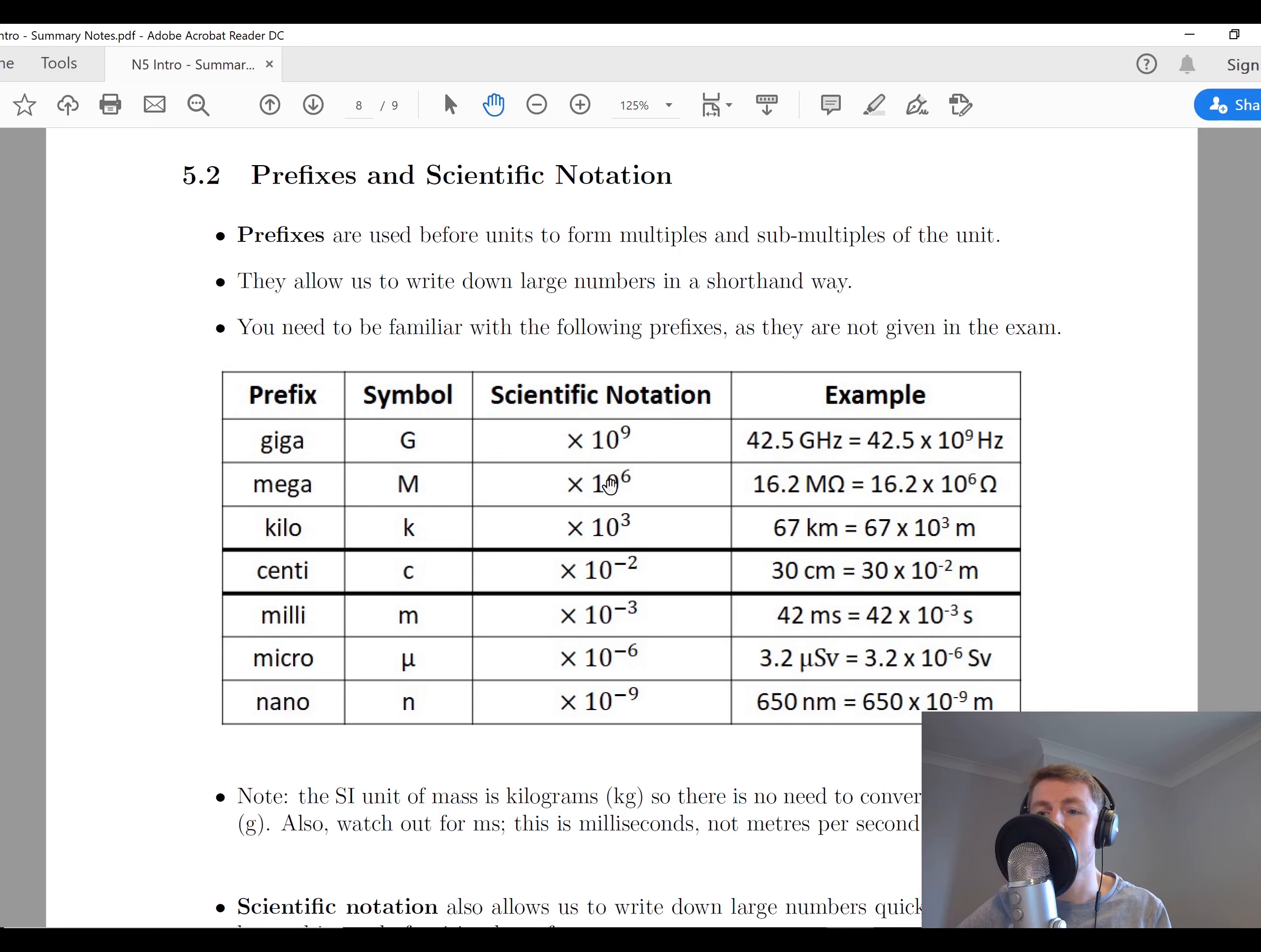This table here is something that you're just going to have to learn because you do not get this in the exam anymore. They used to provide this in the exam on the data sheet, but it's no longer there. If we have a look, we've got six main prefixes and one I've kind of just thrown in there, which is a common one that we've seen. We're familiar with centi from centimeter.